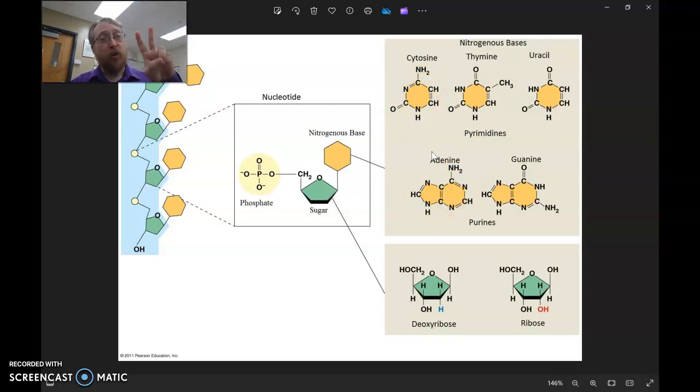Now, there are two categorical varieties of these nitrogenous bases. They can be purines, which have two rings. One of them is a pentagon and one of them is a hexagon. Or pyrimidines, which have one ring, just a hexagon. And these purines and pyrimidines form hydrogen bonds with each other. And that's going to be important later for lots of reasons. So those are what the nitrogenous bases can be.